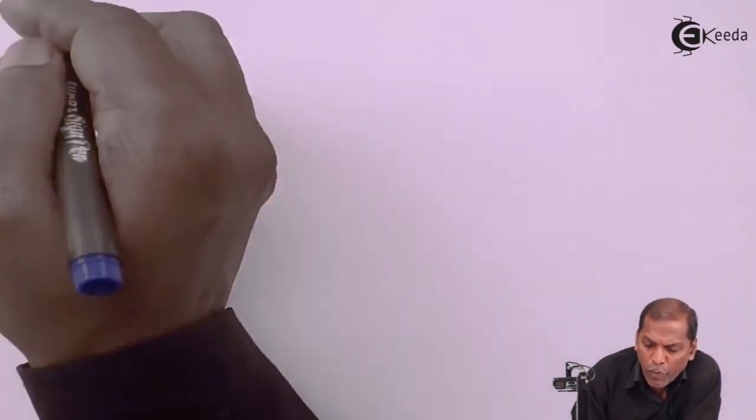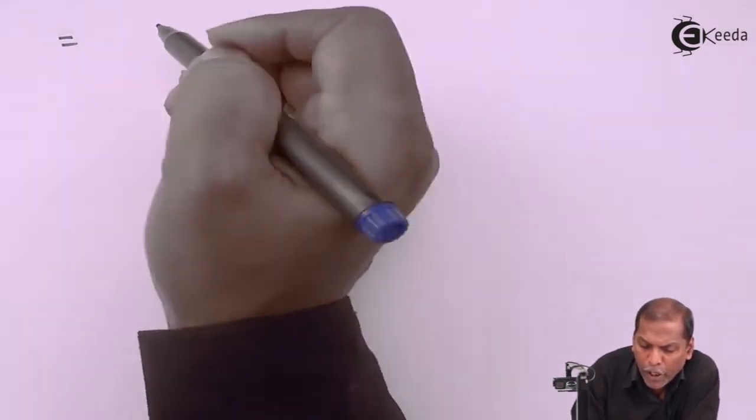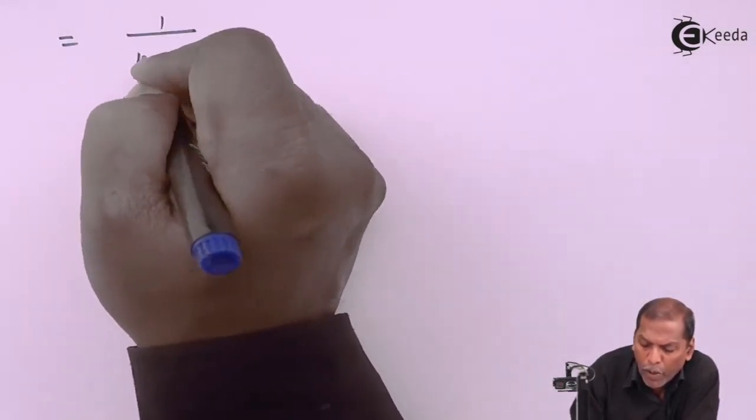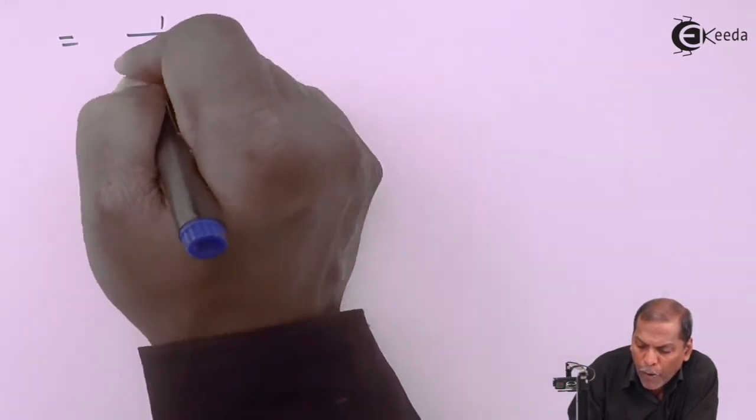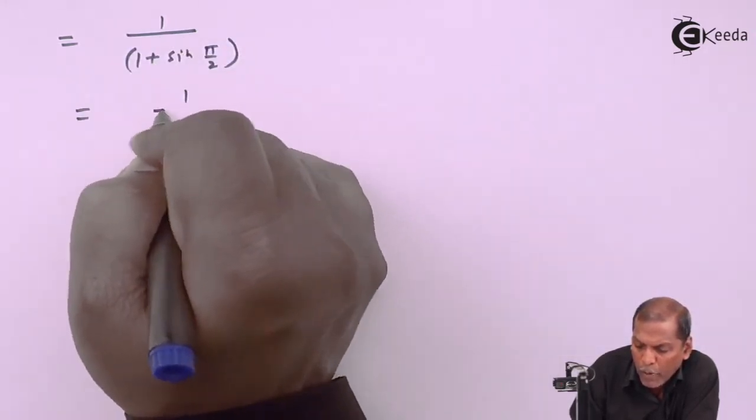Now we substitute the limit as x equals π/2. So the next step will be 1/(1 + sin(π/2)), that equals 1...